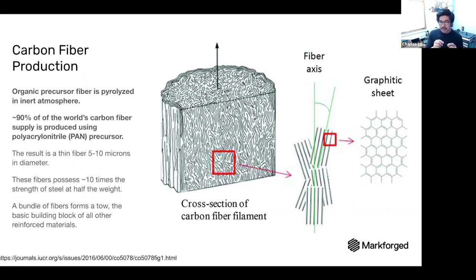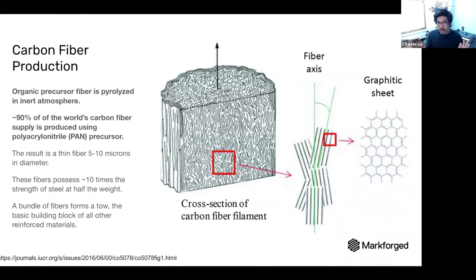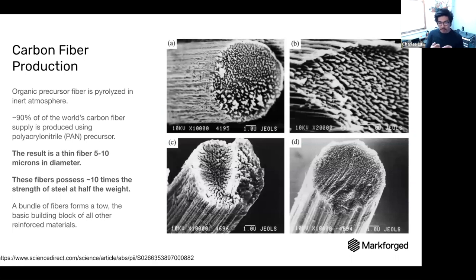A carbon fiber is the result of a pyrolysis reaction. You're taking what we call a precursor fiber — in the case of carbon fiber, we're using polyacrylonitrile (PAN) — and stretching it out into very thin filament. In the carbon fiber manufacturing industry, 'filament' denotes a very long thin strand. In 3D printing, filament is also a long thin strand, but the scale is totally different. The filament we're talking about here is 5 to 10 microns in diameter, whereas 3D printing filament is 1 to 3 millimeters in diameter — three orders of magnitude different. But it's still a very long thin filament.